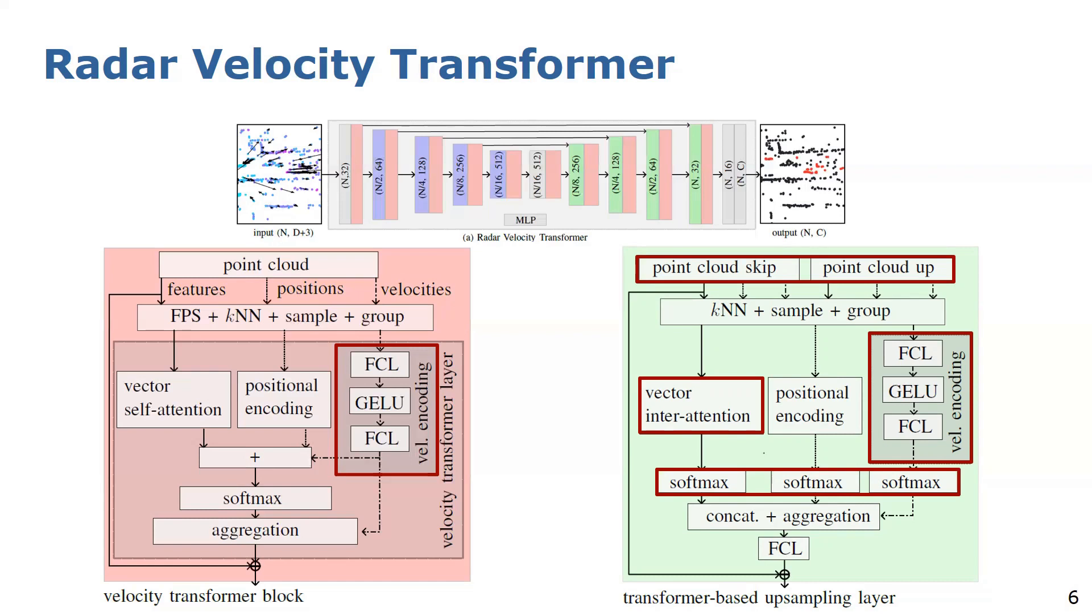For the downsampling, we adopt the max pool. These three building blocks sum up our radar velocity transformer.